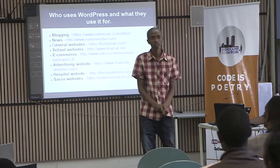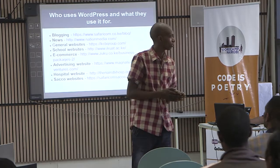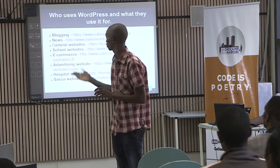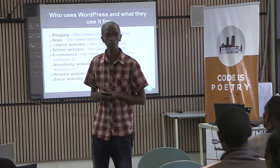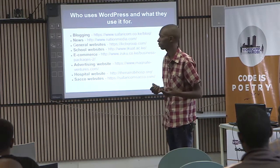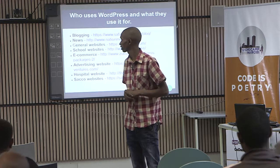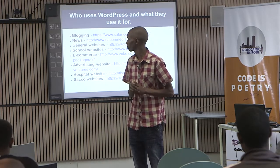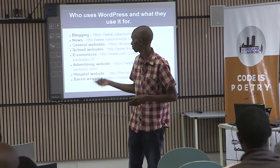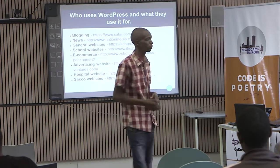Some of the places where you can use WordPress: we have blogging, general websites — for example, Safaricom uses it for their blog, National Media uses WordPress for their news website, KCB's website is on WordPress, schools websites like JKUAT, e-commerce like Zuku, advertising websites like Magnet — those people who do billboards — and hospital websites like Nairobi Hospital. And many more.